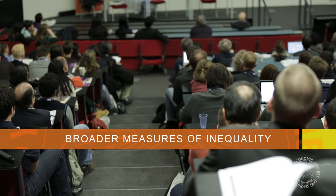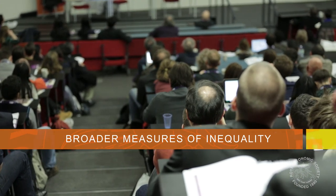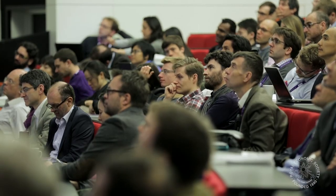Traditional measures of inequality since Dalton's time have looked at income and the distribution from the poorest of the poor to the richest of the rich. But among poor people, it's not only that they're income poor — they're also socially excluded. They can't get a job, they don't have education or good housing, so they are at the bottom not only of income distribution but potentially of many other distributions as well, and that affects their lives.